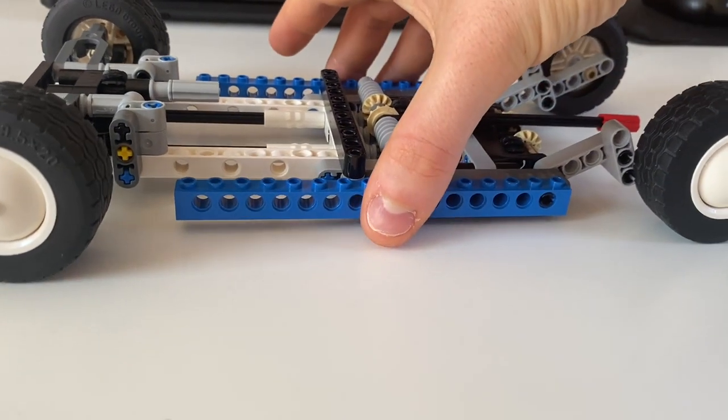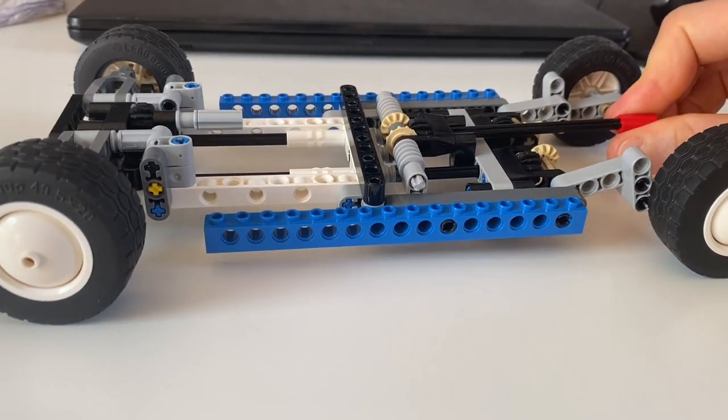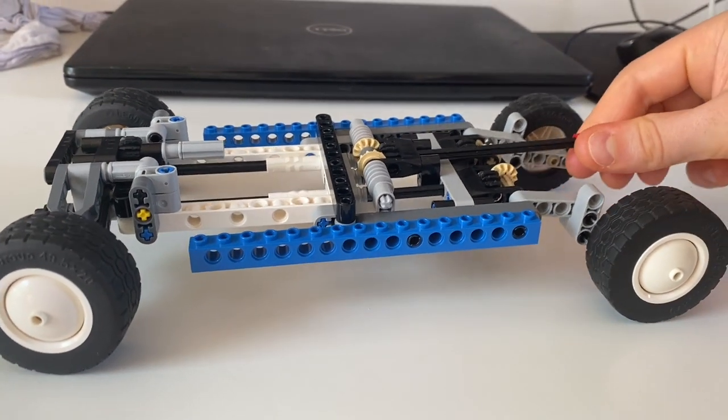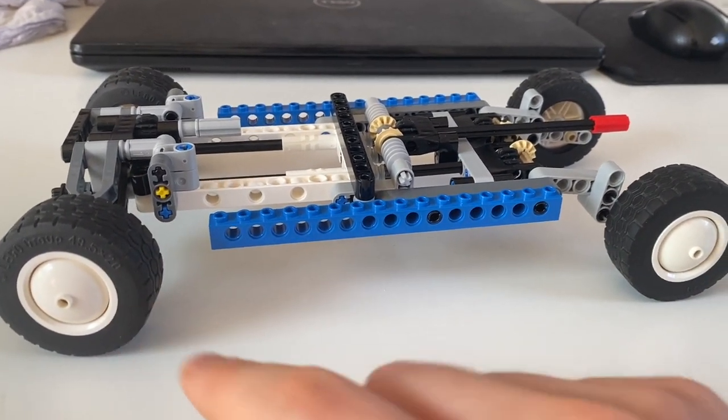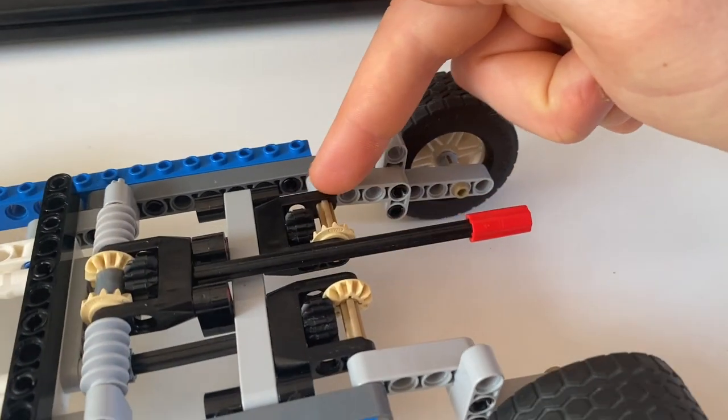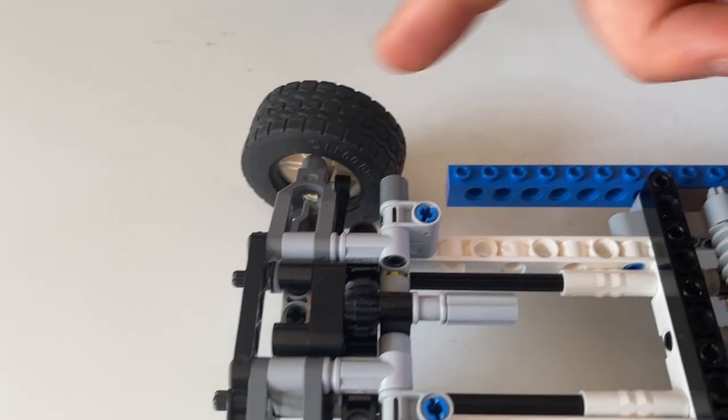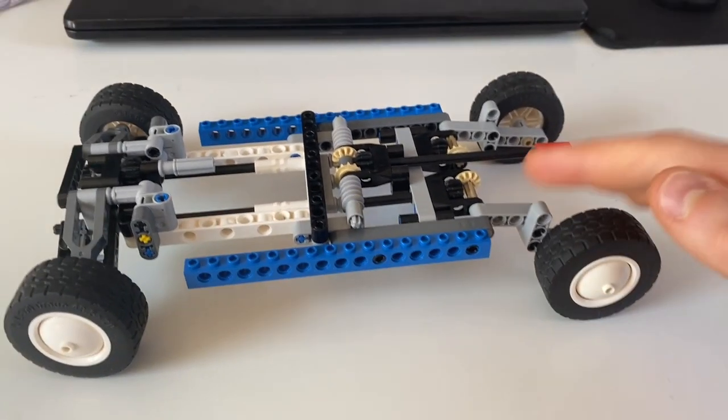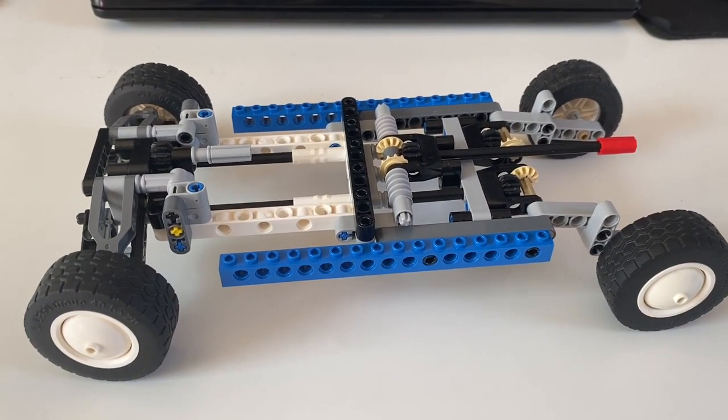And the way that this can be done is by using longer lift arms on this side on the rear than at the front, so the rear moves more than the front when we lift or reduce the height of the car.